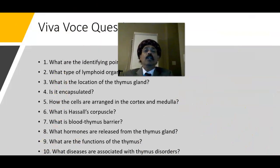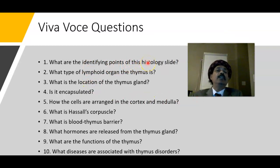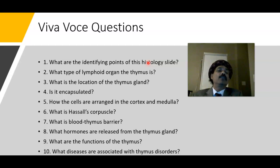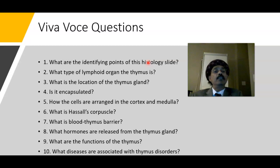For histology slide identification: it is a lymphoid structure with cortex and medulla, lobulated by trabeculae from the capsule. The cortex is thick and darker, containing many lymphocytes, while the medulla is lighter in color with larger, more immunocompetent lymphocytes. Epithelial reticular cells are present in all layers, and the medulla contains thymic corpuscles, also called Hassall's corpuscles.